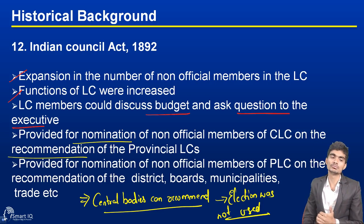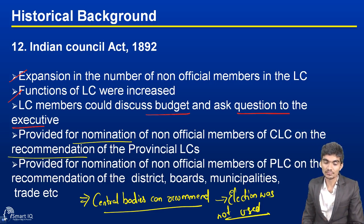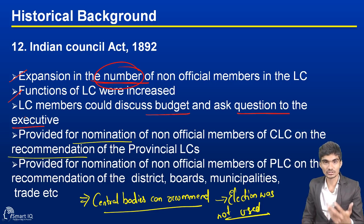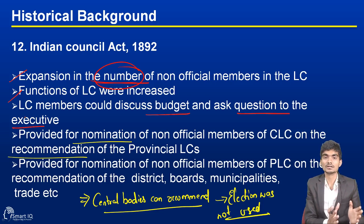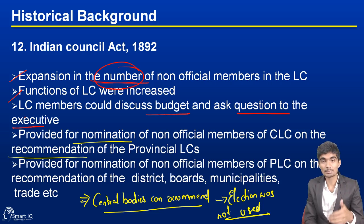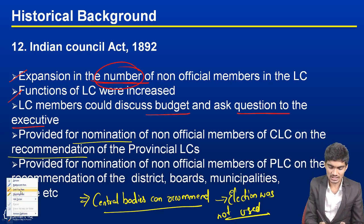After this act, there was an expansion in the number of representations — both in the central legislative council and the provincial legislative council. These were non-official members, but though they were non-official, the representation and numbers were increased in the legislative council.